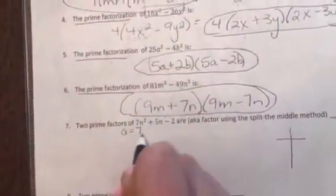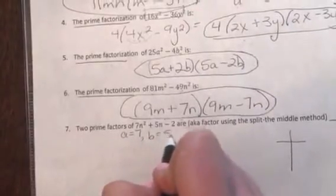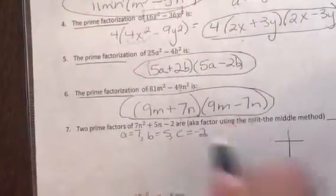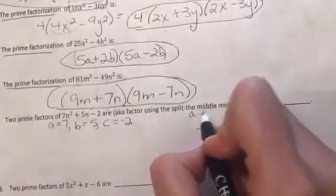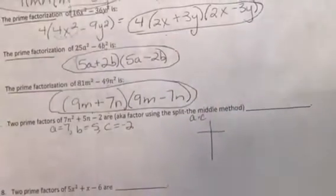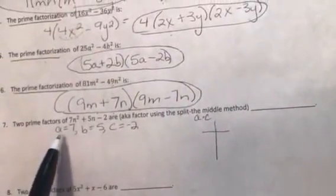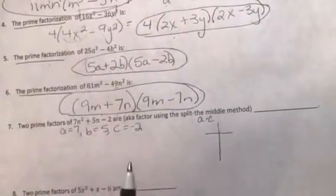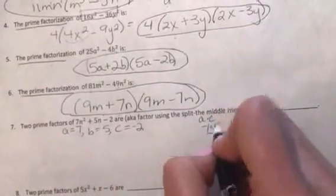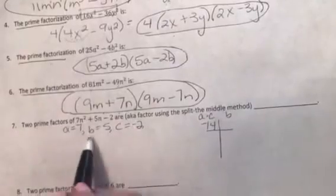Hopefully you think of making a t chart. We multiply, let's first identify a is 7, b is 5, and c is negative 2. And this chart is just a method for guess and check. So we're going to try and find a times c, so that's negative 14, and then b over here, which is 5.